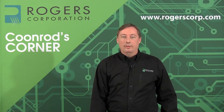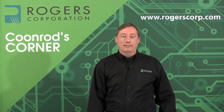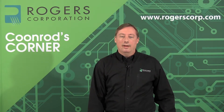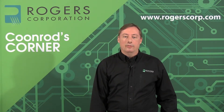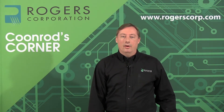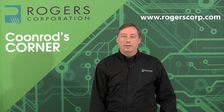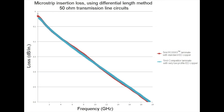Instead of using comparative information from the internet that's in the public domain, I decided to use data that I've collected on circuits that we've made ourselves — that way I can ensure the accuracy of the results. The following slide is an overview of the first part of this study, showing a comparison between another high-frequency laminate material and our 5 mil thick RO3003 with standard ED copper. You can see in this range of scale and frequencies these materials look very similar, which is correct and valid data.